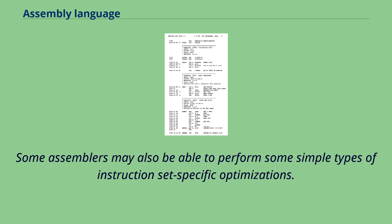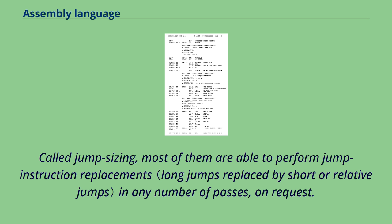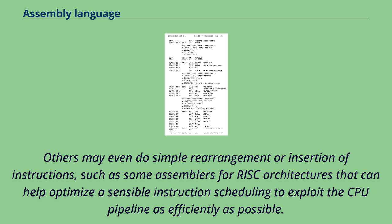Some assemblers may also be able to perform some simple types of instruction set specific optimizations. One concrete example of this may be the ubiquitous x86 assemblers from various vendors. Called jump sizing, most of them are able to perform jump instruction replacement in any number of passes on request. Others may even do simple rearrangement or insertion of instructions, such as some assemblers for RISC architectures that can help optimize sensible instruction scheduling to exploit the CPU pipeline as efficiently as possible.